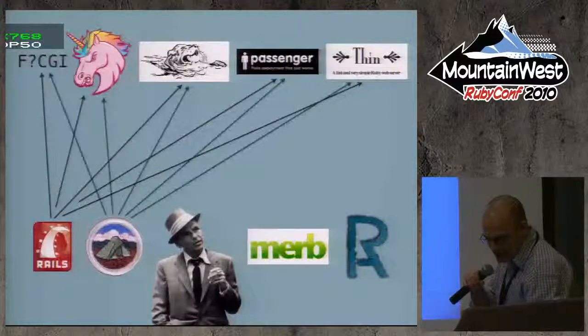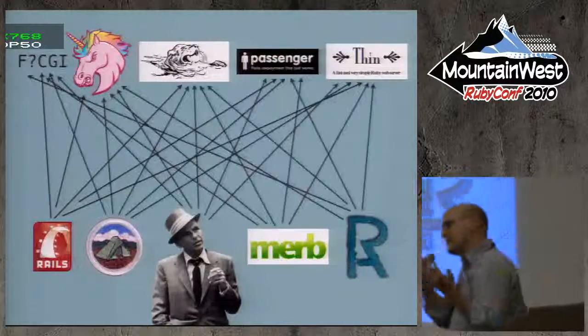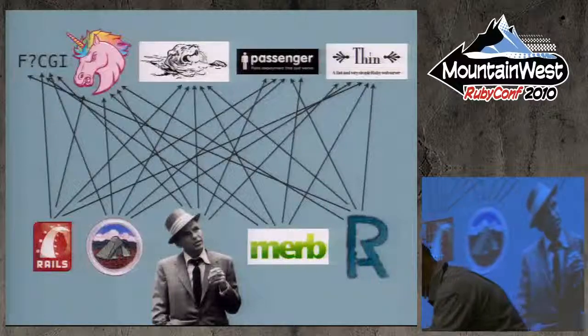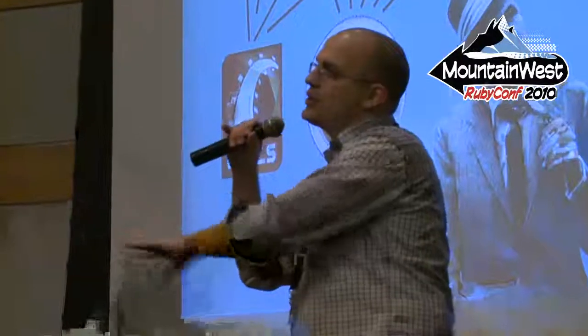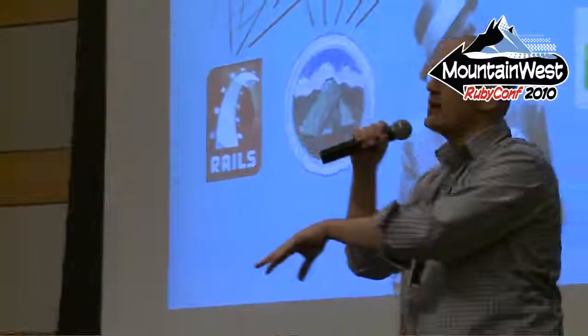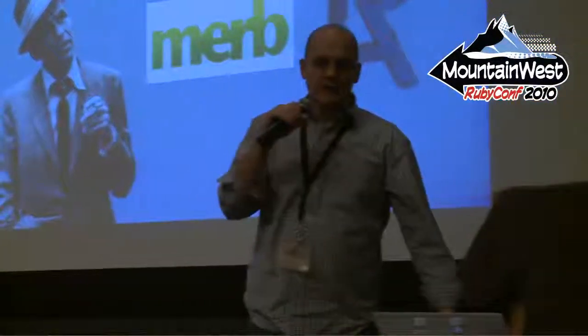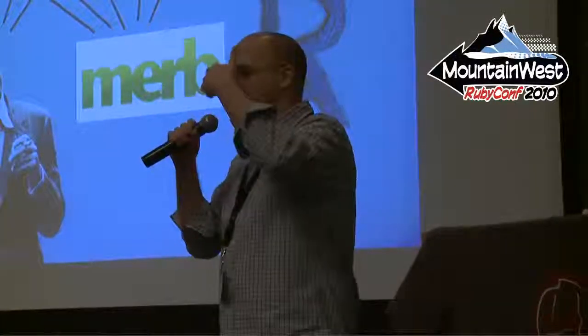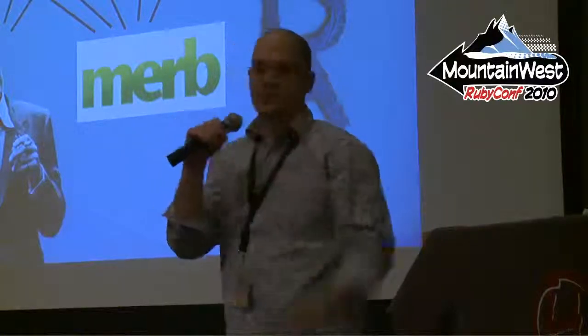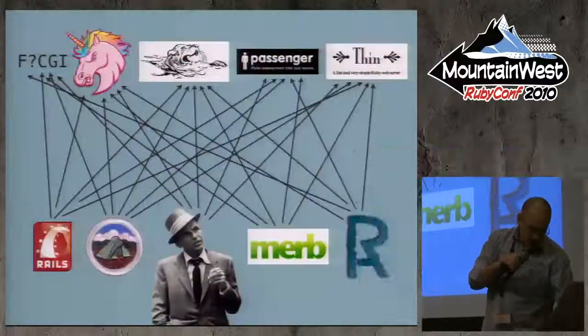If you do the math and follow the pattern: any time you want to write a framework, if you want to run it on all the different servers, you have to figure out how you're going to run it on each one. You don't ever think about this if you code PHP, because it's just: we're going to run on Apache and mod_php, obviously. But it changes when you've got a language like Ruby that wasn't written for the web — people are just using it for the web. So it's a mess.